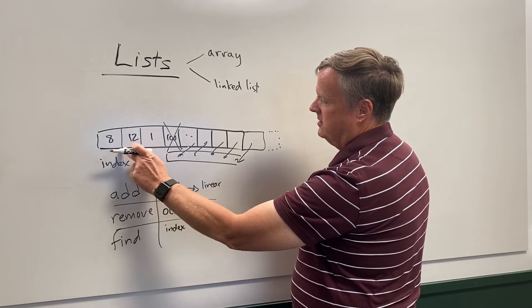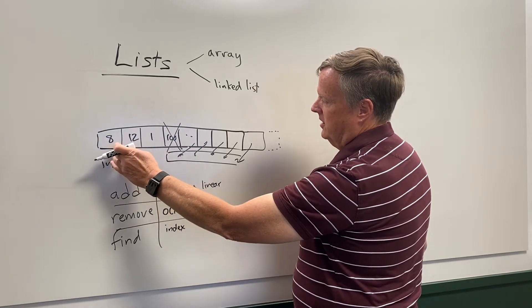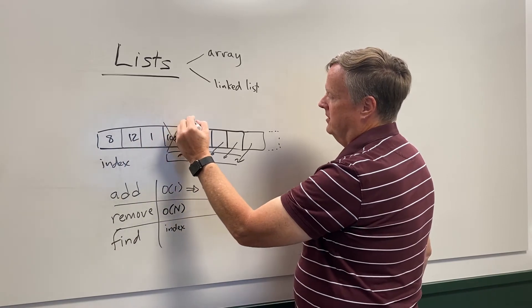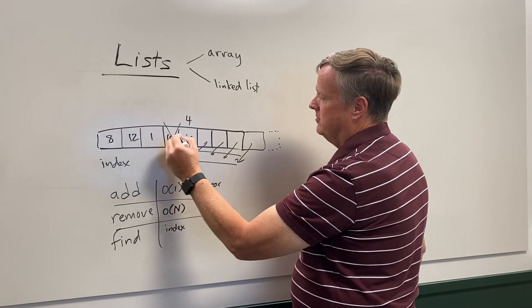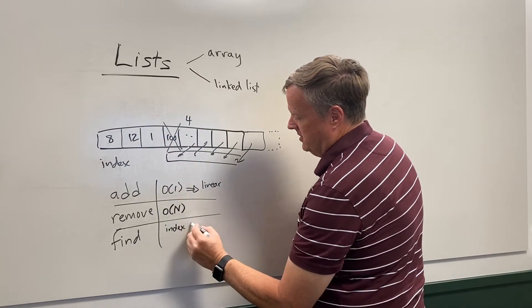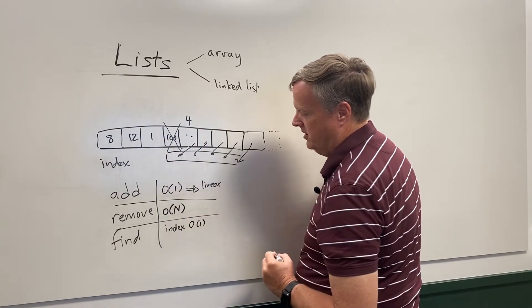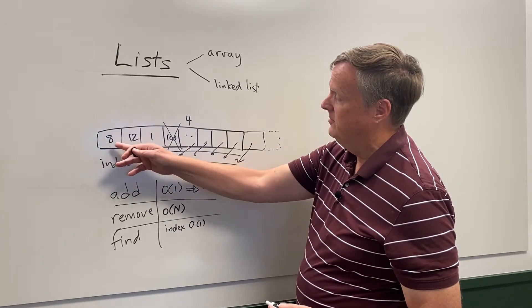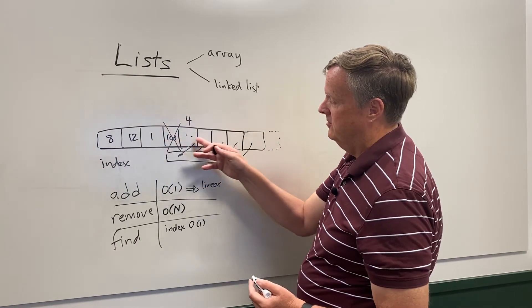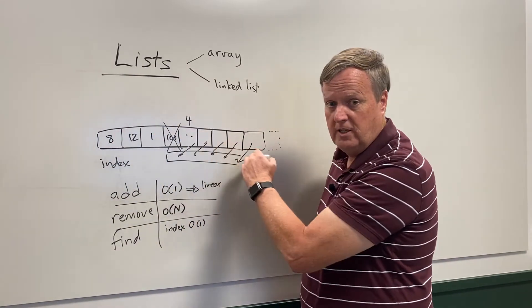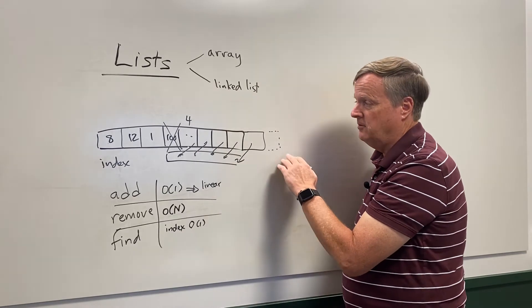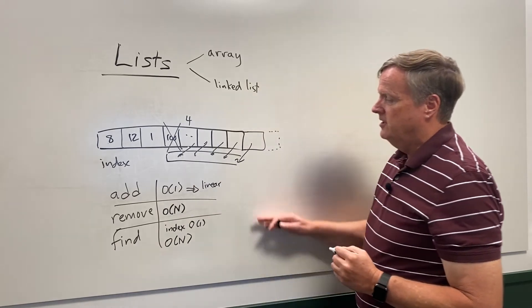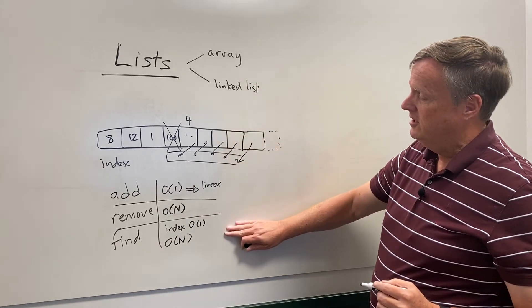Now let's talk about finding. If I have an index and already know where the element is, it's simple mathematics — I can quickly jump to, say, index 4 (0, 1, 2, 3, 4). That's a constant-time operation. If I don't have an index and need to find the element, I have to scan through every single one, visiting each element once, making it a linear operation.